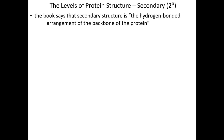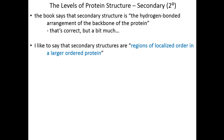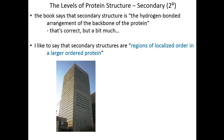So now we have primary structure in the bag. That allows us to bump up to secondary structure. Your textbook defines secondary structure as 'the hydrogen-bonded arrangement of the backbone of the protein,' which is true, but that loses all the nuance. I like to think about secondary structure as regions of localized order in a larger, more ordered protein — that's the working definition to get comfortable with over the next few slides.